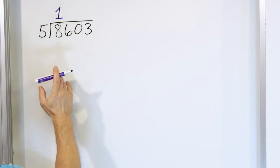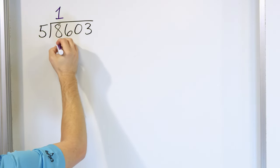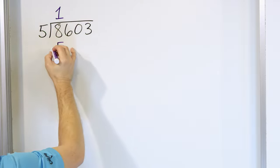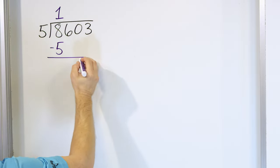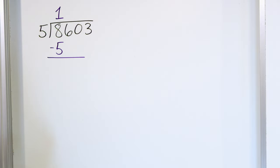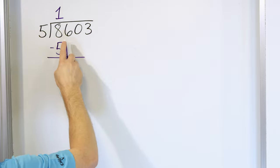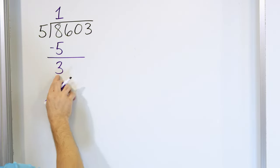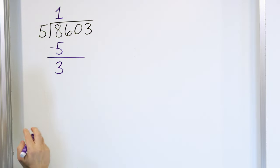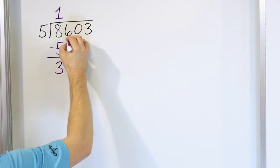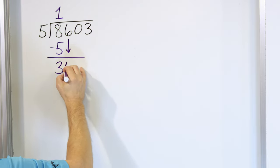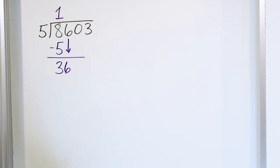So 5 times 1 is 5. We multiply and write it directly under the 8 and subtract. 8 minus 5 is 3. Now after we subtract, the next thing is always to grab the next digit and bring it down. Now we have a 36.